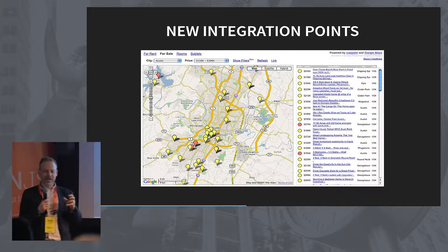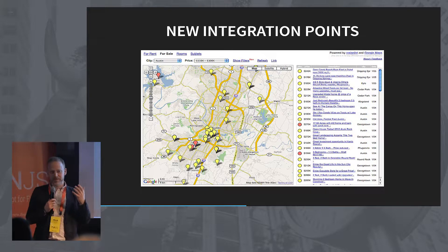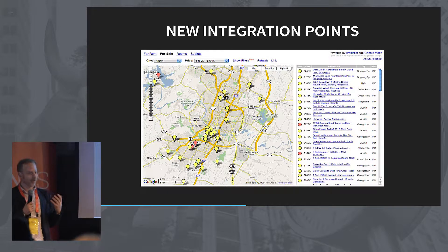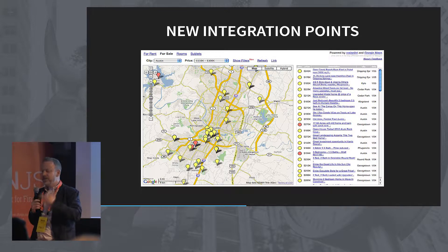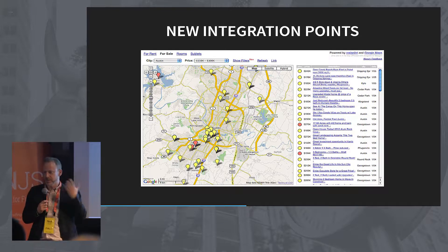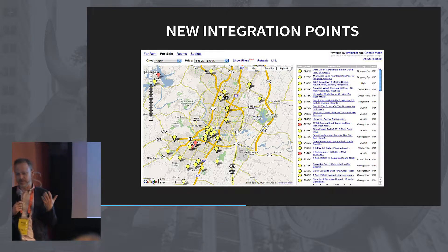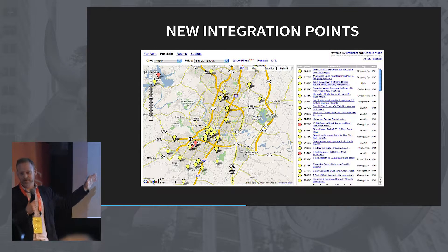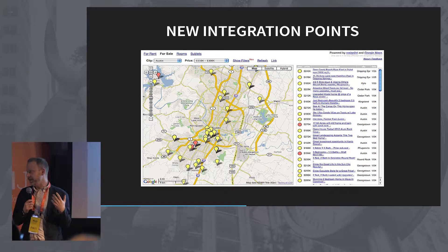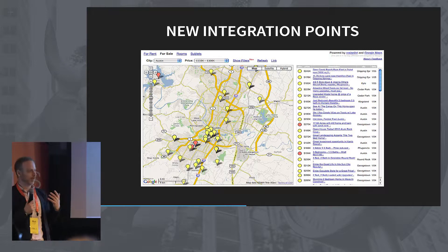All of a sudden you had hundreds and hundreds of Google Map mashup apps. This was really exciting, because you could take a dataset, put a map on it, and it looked great — you had this kind of interactivity. It was all on the client.